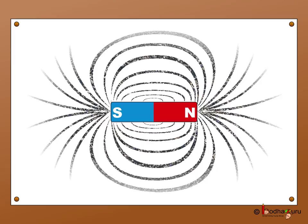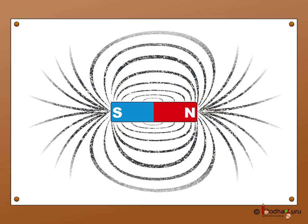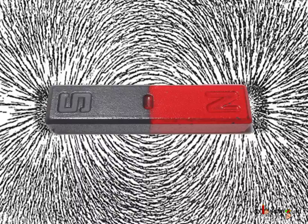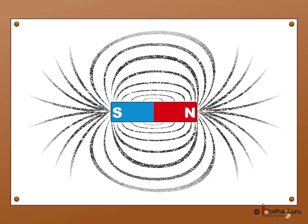The iron powder would create a pattern similar to this. The bigger part of the powder would get attracted to the two poles. And near the middle region of the magnet, there would be very little powder left. So we can see the powder creating line-like patterns starting from both the poles.